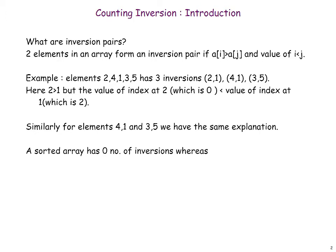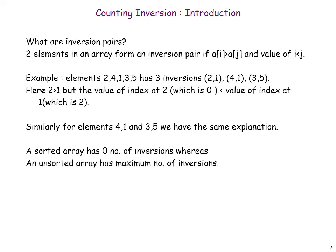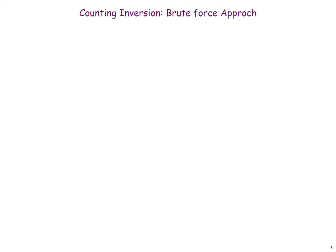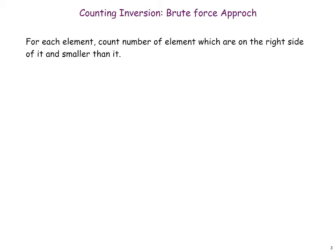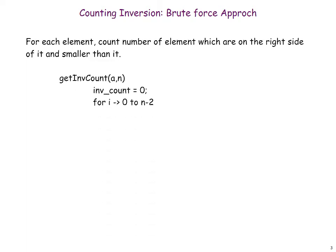A sorted array has 0 inversions whereas an unsorted array has the maximum number of inversions. We move on to the brute force method which is used to count the number of inversions. In this method, we iterate the array element by element and for each element we check the number of smaller elements to the right of the selected element.